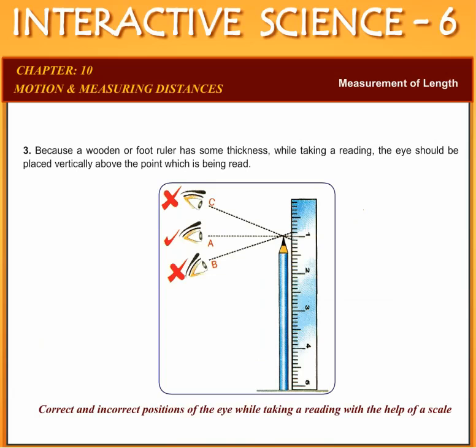3. Because a wooden or foot ruler has some thickness, while taking a reading the eye should be placed vertically above the point which is being read.